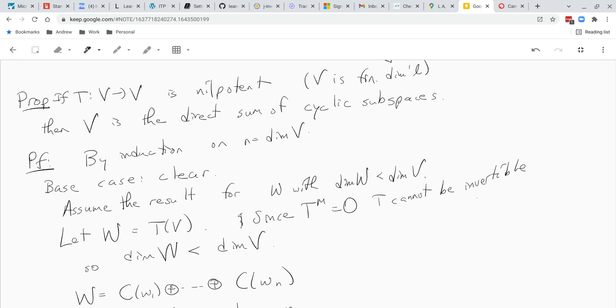Hi guys, so in this video I'm going to prove that if you have a nilpotent linear operator on a finite dimensional vector space, then that vector space is the direct sum of cyclic subspaces and we do it by induction on the dimension of V.